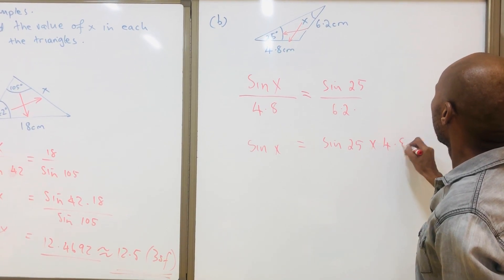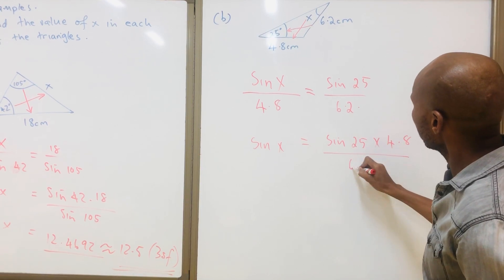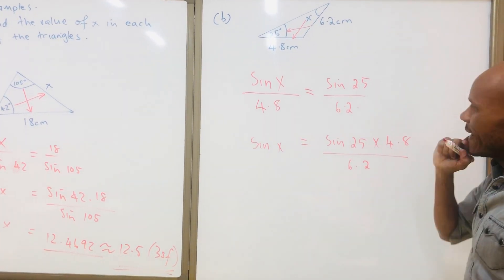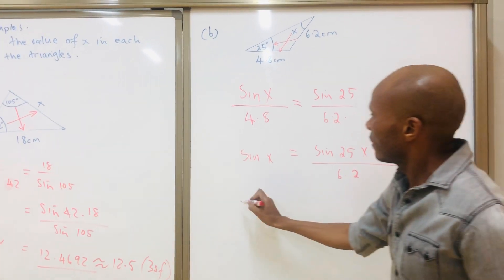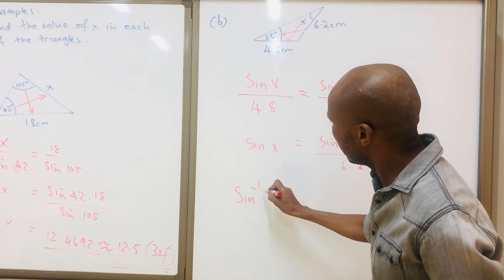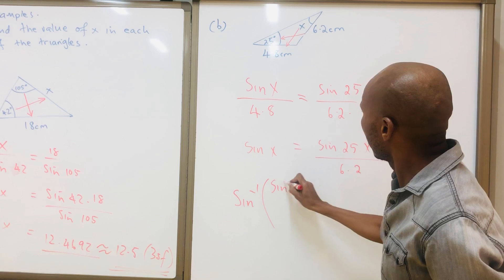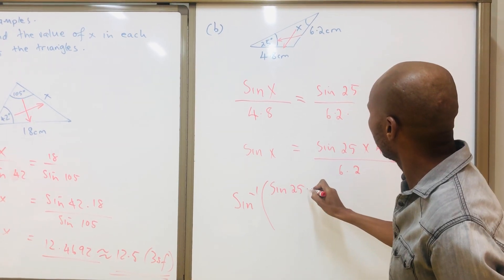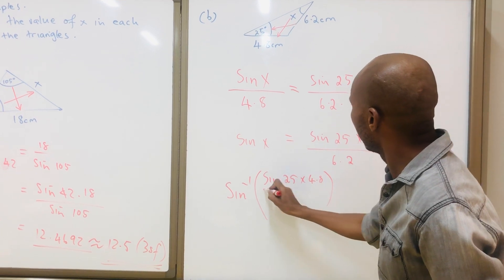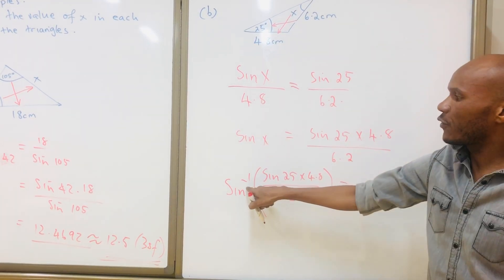4.8 divided by 6.2. If you want to find the angle, that would be sine inverse, then sine 25 times 4.8 all over 6.2.